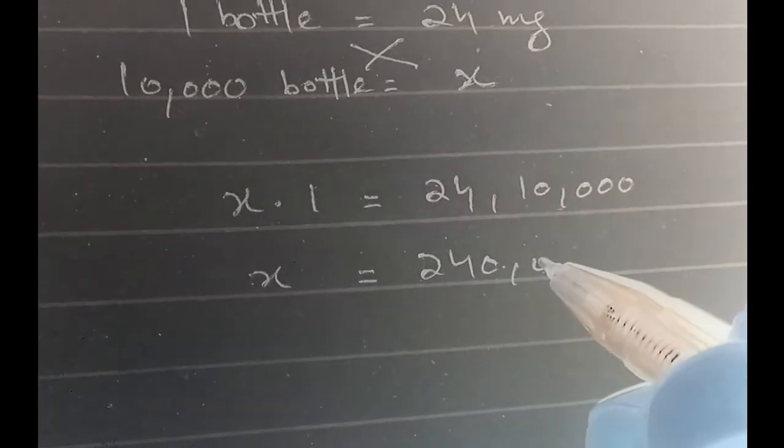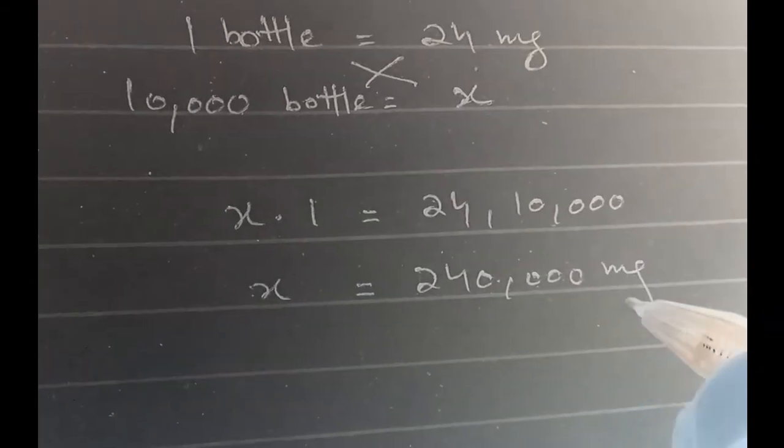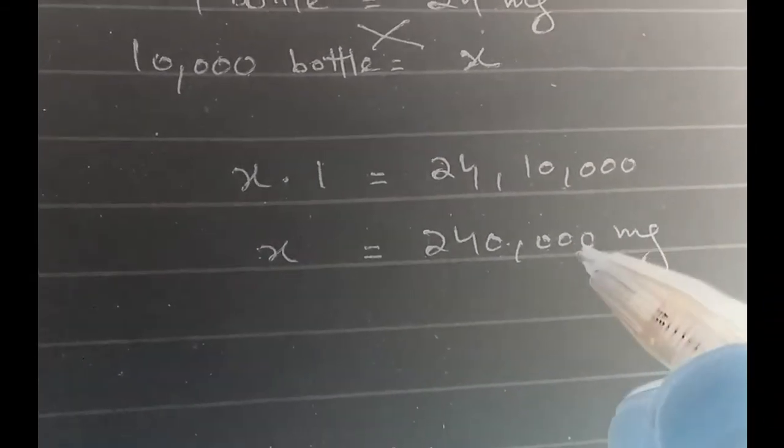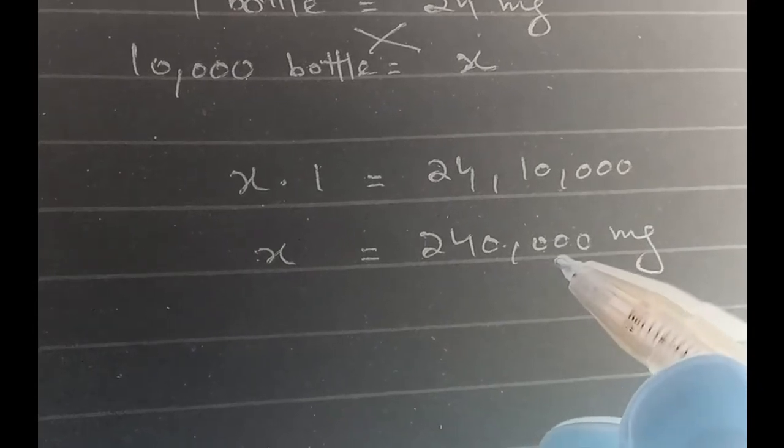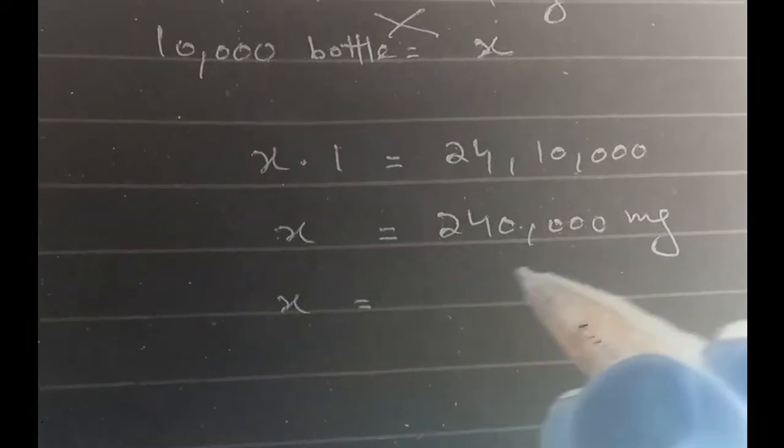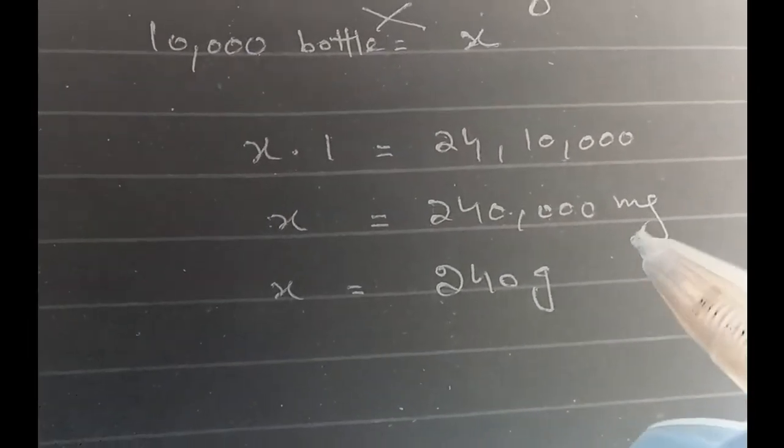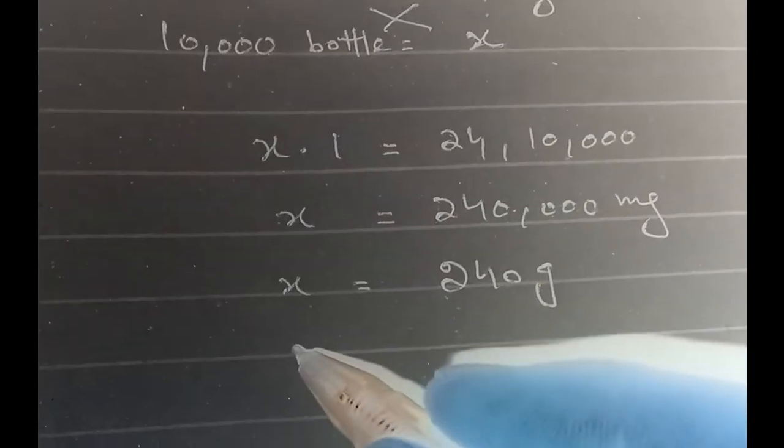240,000. Actually this much milligram of the active pharmaceutical ingredient we will need to make the whole batch. We can also write this down in grams like this: 240 grams, as one gram has 1000 milligrams in them.